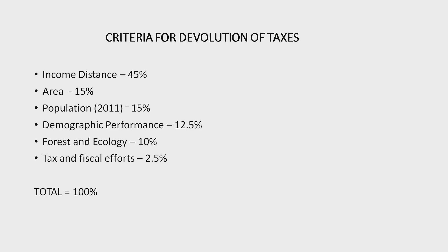The criteria for distribution of central taxes among states for the 2021-26 period is the same as that for 2020-21. The criteria for devolution includes income distance, which is the distance of a state's income from the state with the highest income. Income of a state has been computed as average per capita GSDP during the 3-year period between 2016-17 and 2018-19. A state with lower per capita income will have a higher share to maintain equity among states.